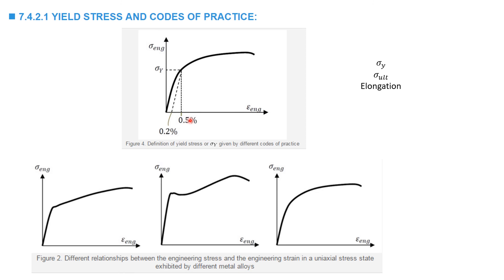The CSA Z662 code, for example, for pipeline steel, defines the yield stress as that corresponding to a total strain of 0.5%. So, at 0.5% strain, draw a vertical line where it intersects with the curve that is the yield stress.